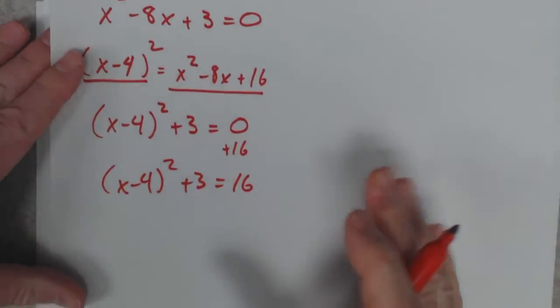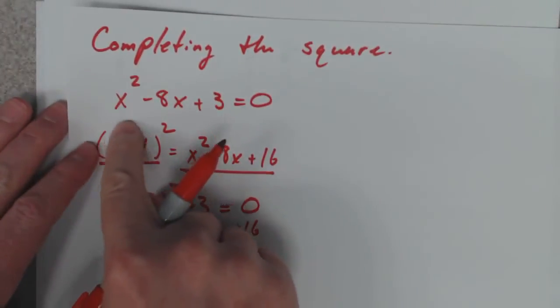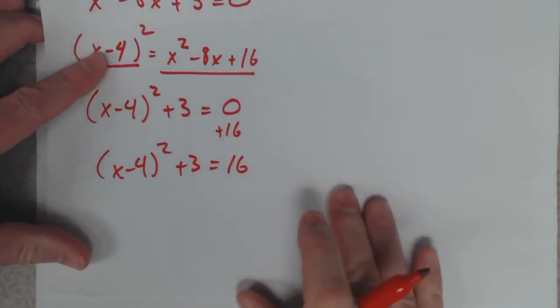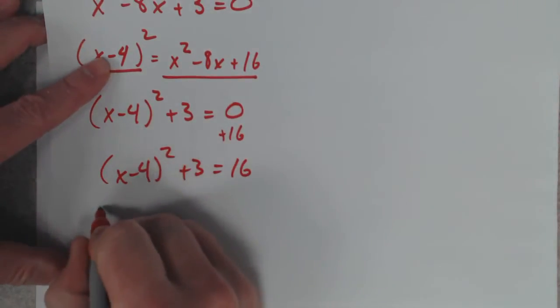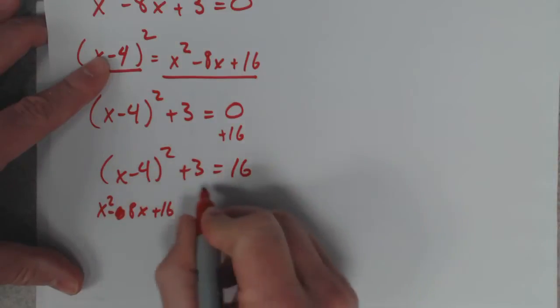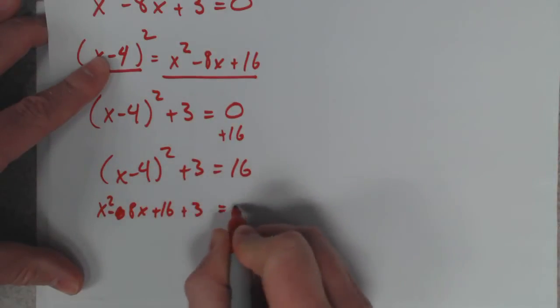All right? So, now, if you don't believe me, if I multiply this out, I should get this right here. So, if you don't believe me, let's multiply this out. That right there is the same thing as x squared minus 8x plus 16 plus 3 equals 16.